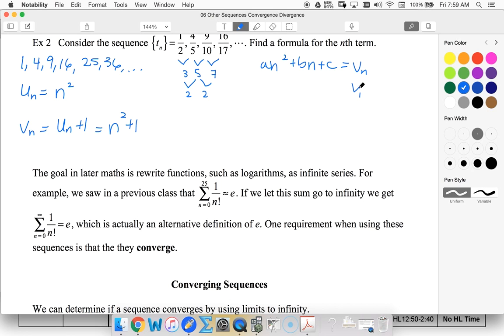We know that v sub 1 is 2, so 1 squared, of course, is just 1, so a plus b plus c equals 2. We know v sub 2 is 5,